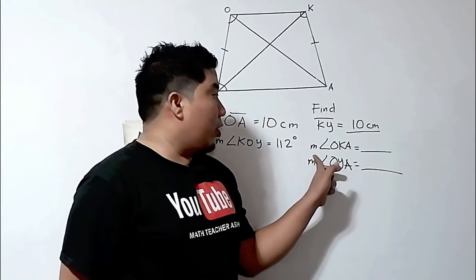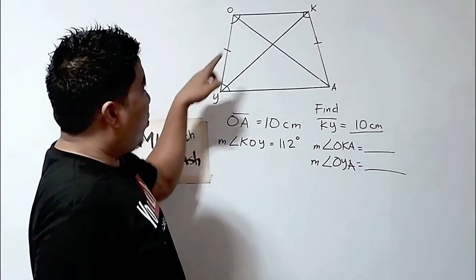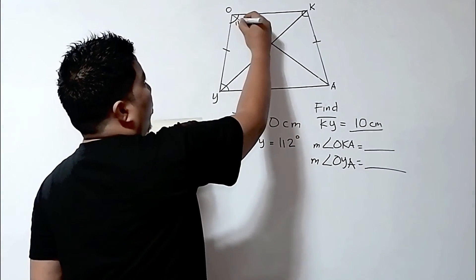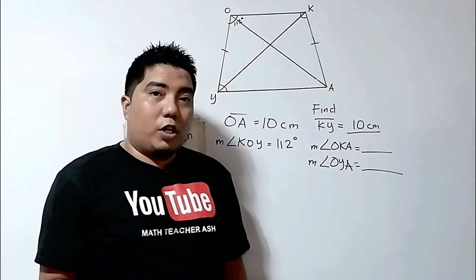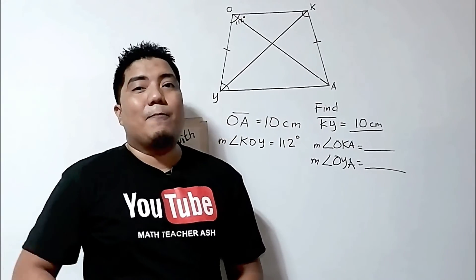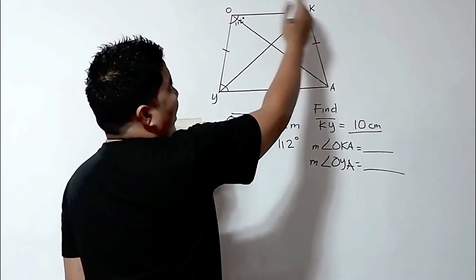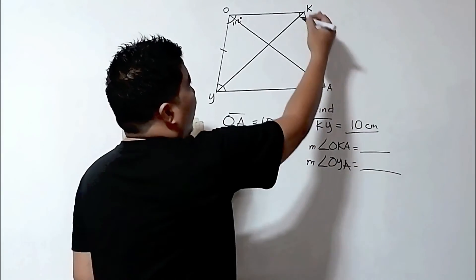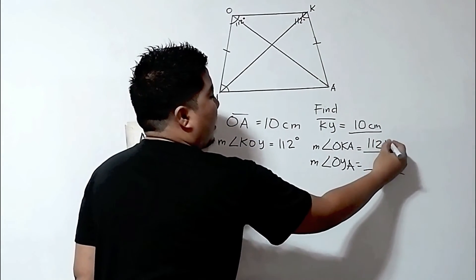Now let us go to the measurement of angle OKA. Since we have KOY which is 112 degrees, and one of the properties of an isosceles trapezoid states that base angles are congruent — this is a base angle and another base angle from the same base — so therefore angle OKA is also 112 degrees.